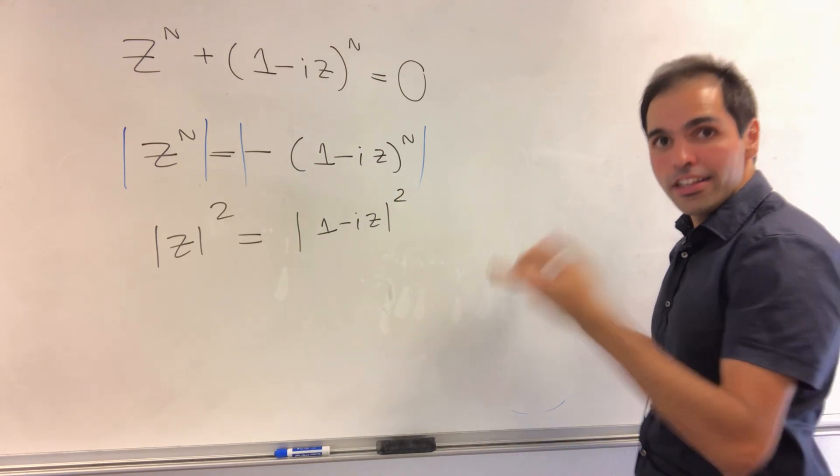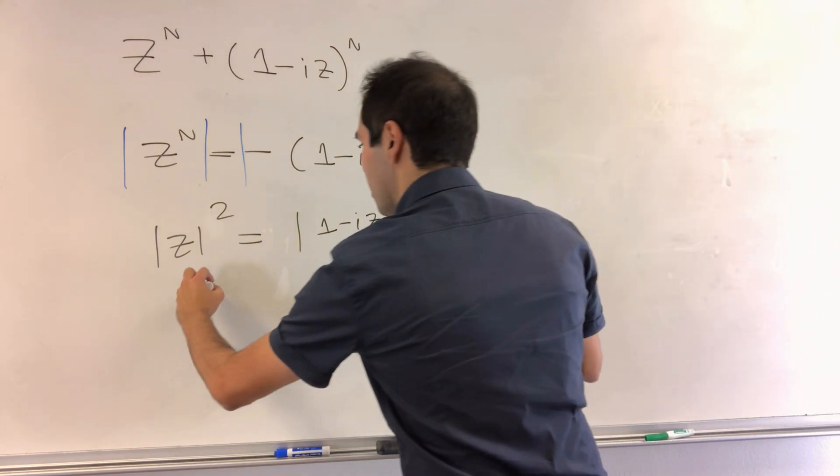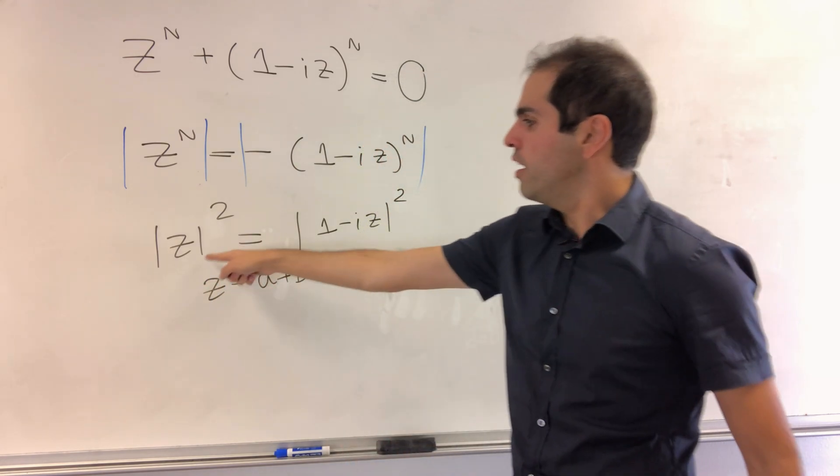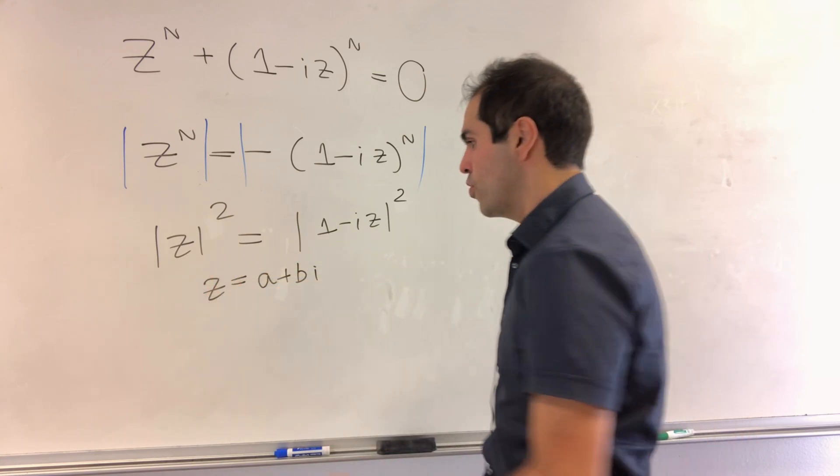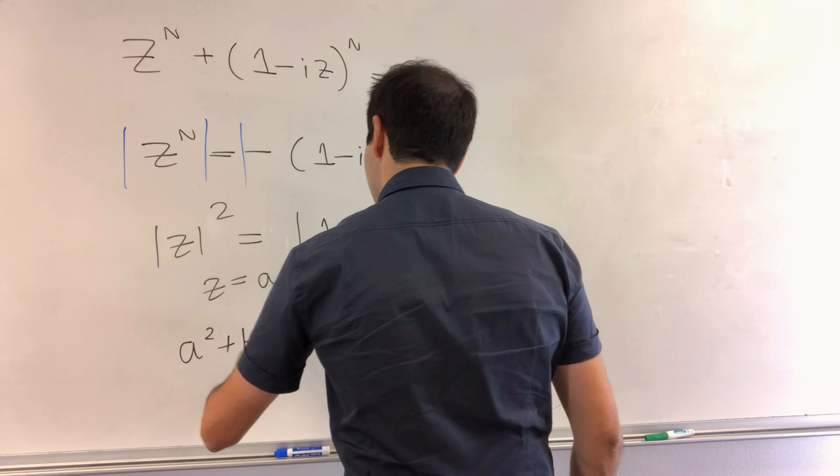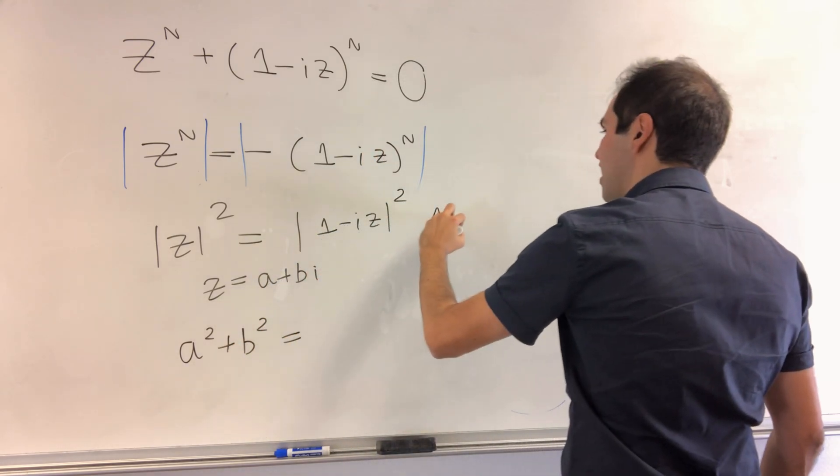And now assume that z equals a plus bi. Then on the one hand, absolute value squared becomes a squared plus b squared. On the other hand, what is 1 minus iz?